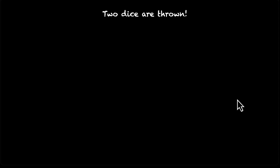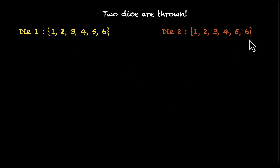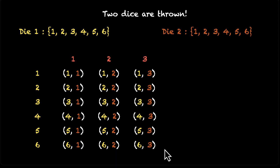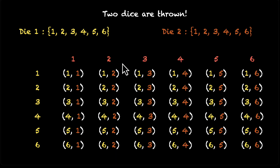First things first — two dice are thrown, so let's bring out our sample space. For the first die we have six sample points: one, two, three, four, five, six. For the second die we have the same. When we roll them together, we get a sample space of six times six, which gives us thirty-six distinct sample points, because two-and-one is different from one-and-two — it matters which die shows which number.